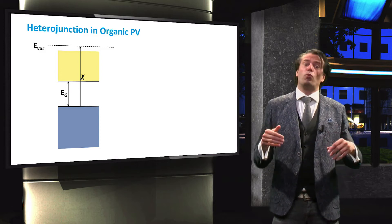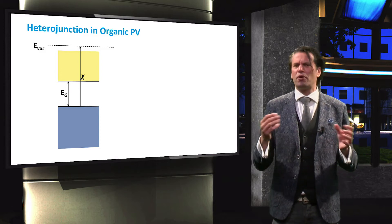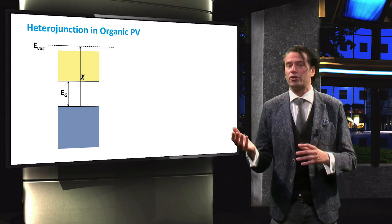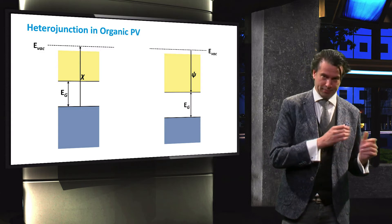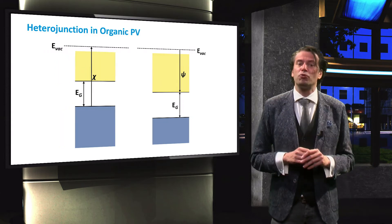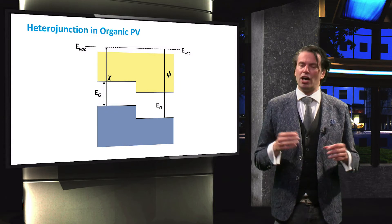Using the concepts we discussed, we can theorize that by bringing together an electron donor on the left and an electron acceptor on the right, the interface formed will resemble that of a heterojunction.